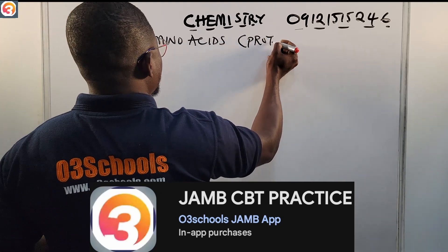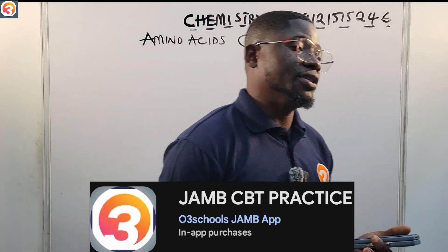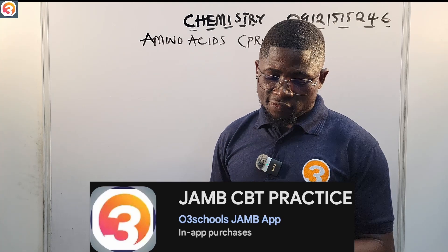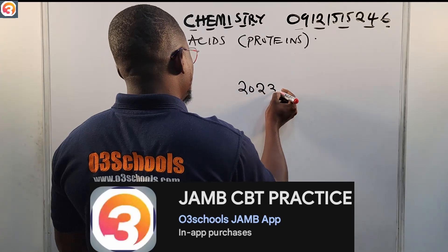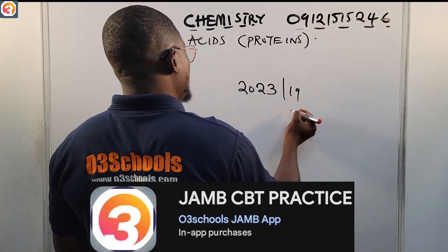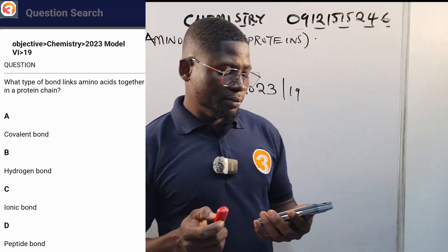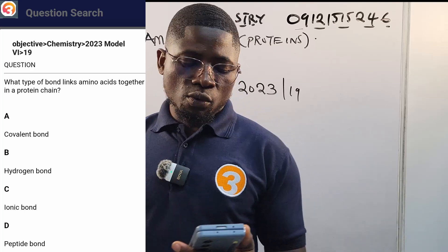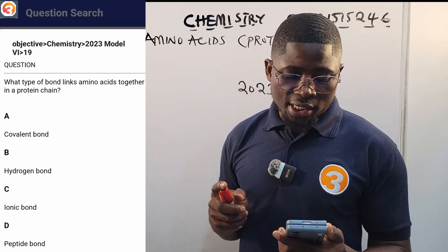This tutorial is brought to you by the O3 School JAM CBT practice app — the app is all you need to succeed in exams. Let's see a question from the app: this is JAM past question number 19 of 2023. So, what type of bond links amino acids together in a protein chain?